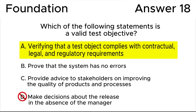Answer D is wrong because a Quality Assurance Engineer can provide expert conclusions about the quality of a product, but the final decision remains with the management or stakeholders. This statement contradicts test objectives, which is about providing information to stakeholders to allow them to make informed decisions.